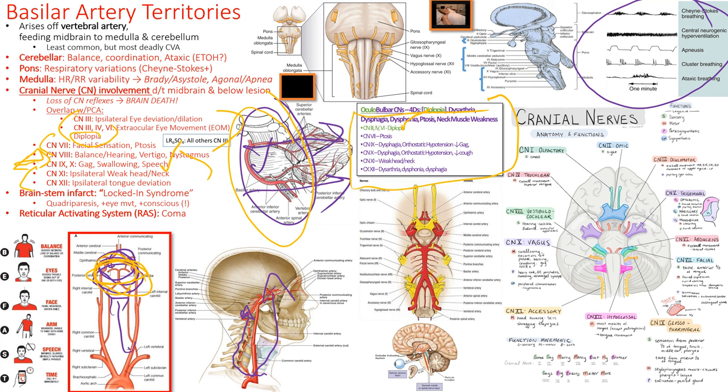Cranial nerve twelve — the tongue doesn't work well and it might not taste well, but the big symptom we're worried about is dysarthria and dysphagia — they can't talk well and can't swallow well, which is a problem. There are psychosocial needs to address, but the more physiological concern is they can choke and aspirate — we have to be alert to that. Cranial nerve eleven means a weak neck — they can't shrug their shoulders well or may get fatigued throughout the day.